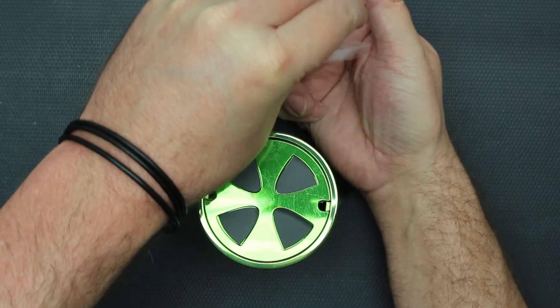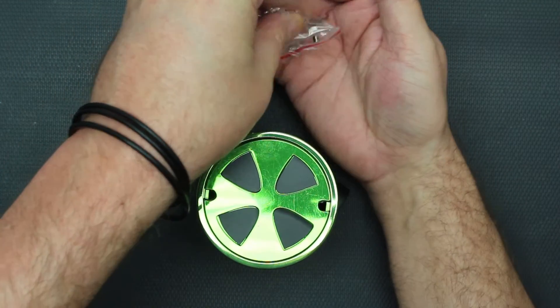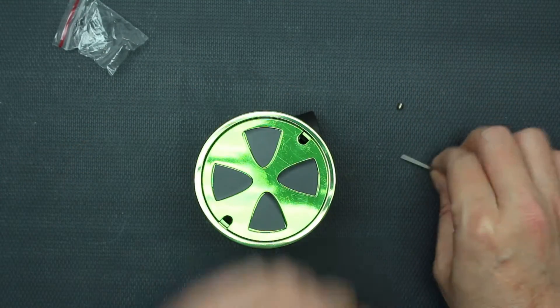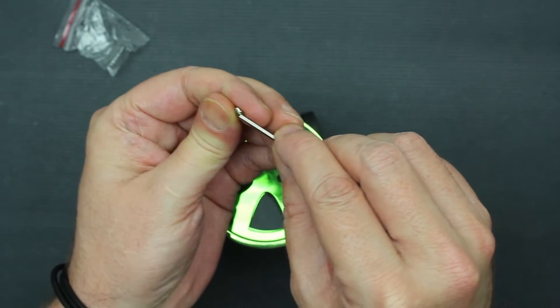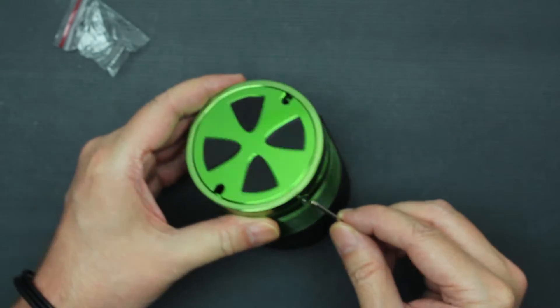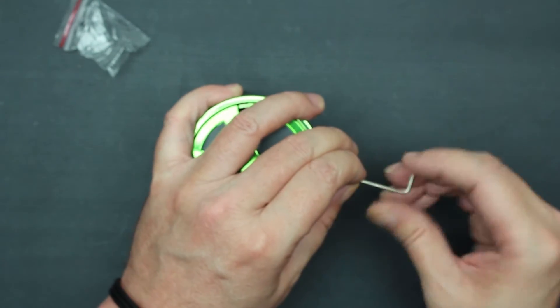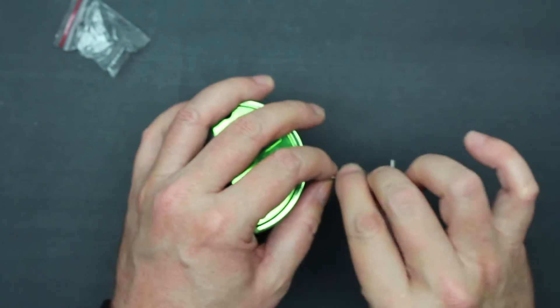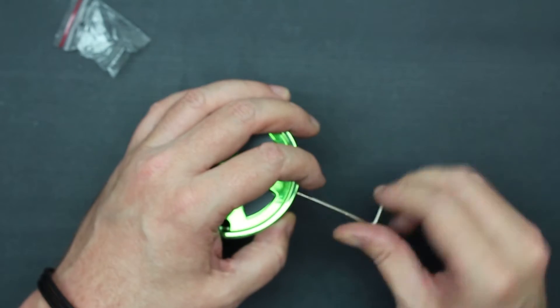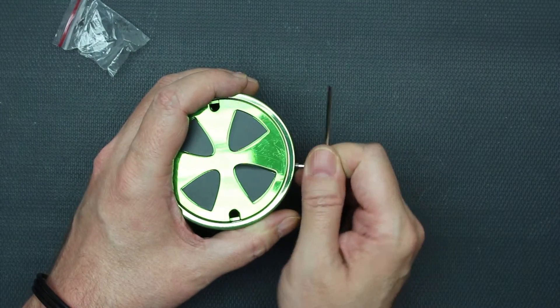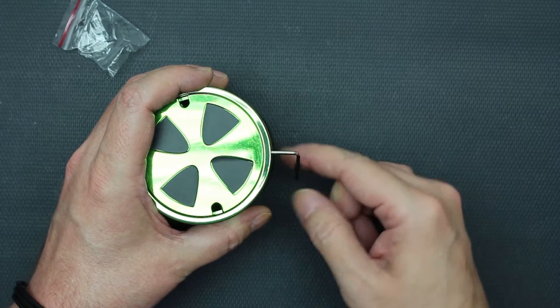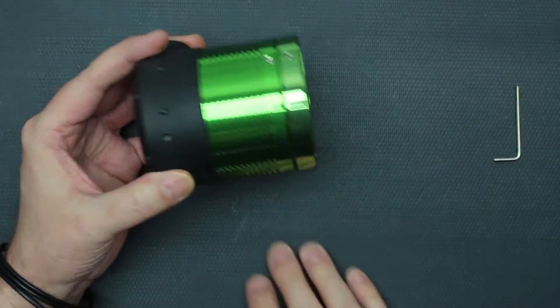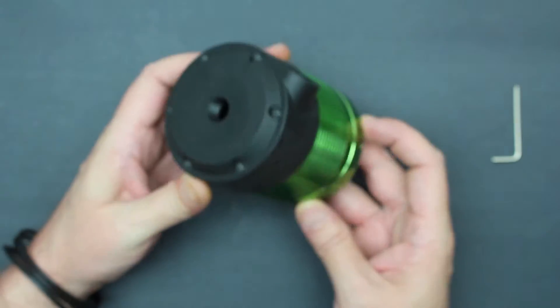Take the other set screw, which refuses to fall out of the bag. Just snug it up a little bit.